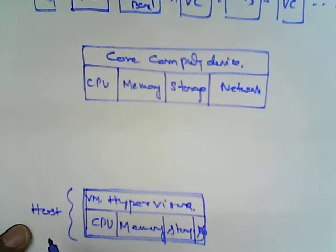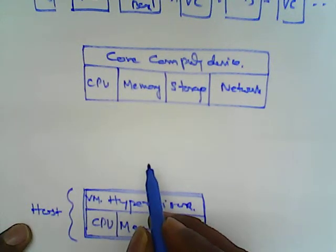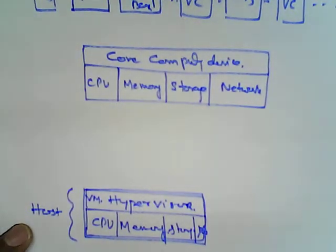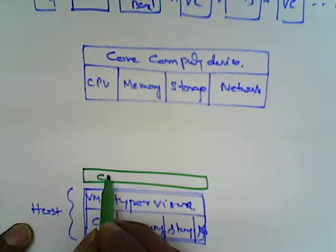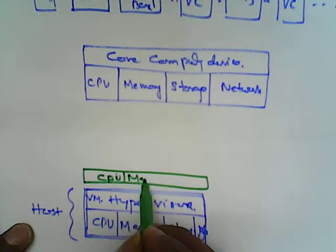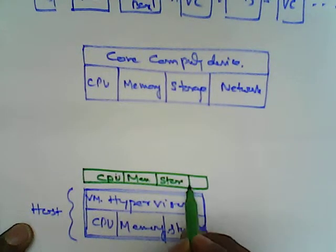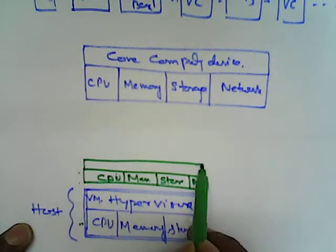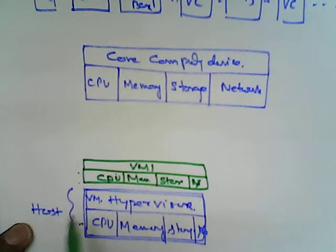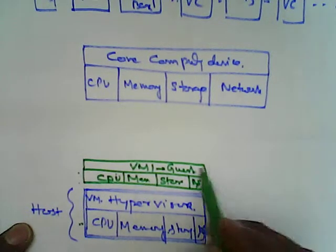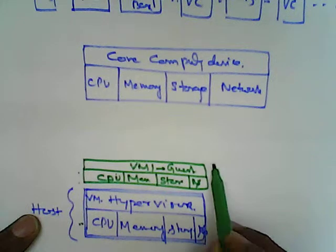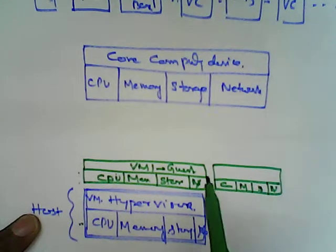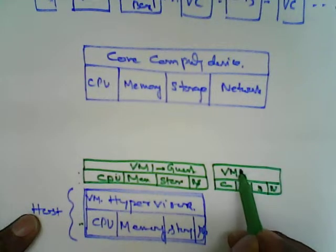On the top of the host, we are creating another network. We are creating another CPU, memory, storage, and network — the same thing. Just like this one, it is also the same thing. And on the top of it, let us take VM1, or we call it as a guest. Like that, we create another same block — CPU, memory, storage, and network — and on the top of it we create VM2, which is also a guest.